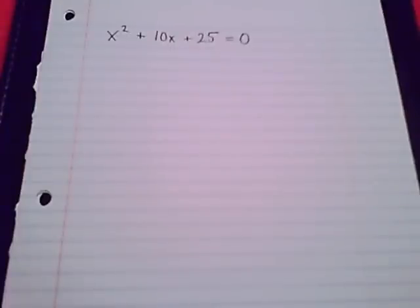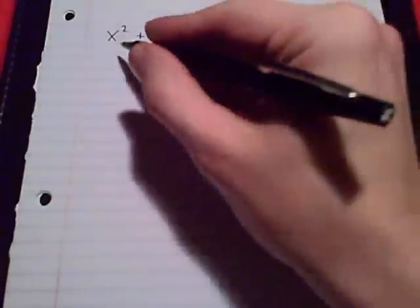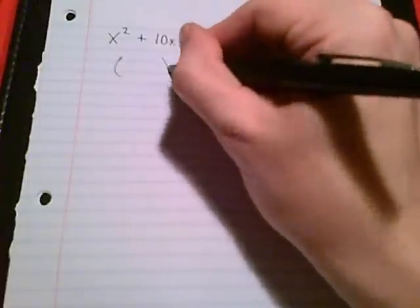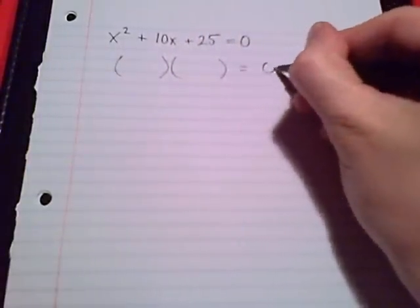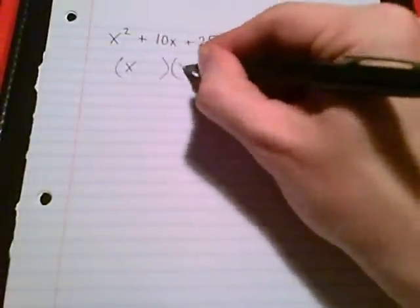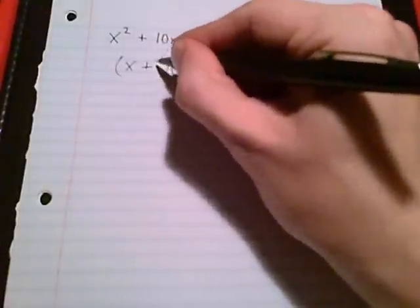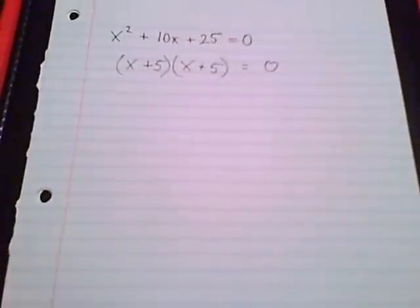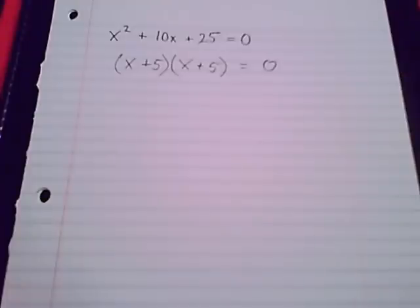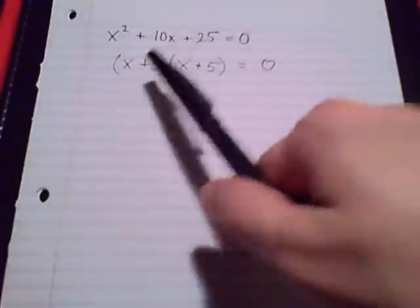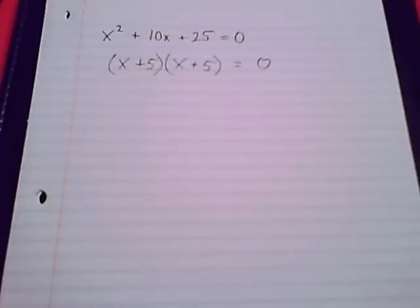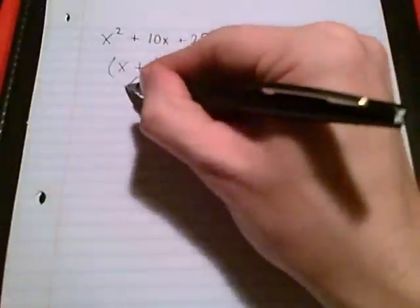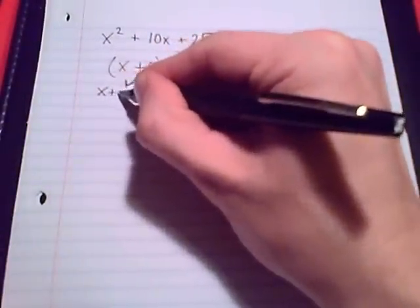This is a good example: x squared plus 10x plus 25 equals zero. We'll first solve by factoring. You might have spotted that it is a perfect square — that would be x plus 5 times x plus 5. We're going to show what happens when we solve by factoring: we factor it and then split and solve.